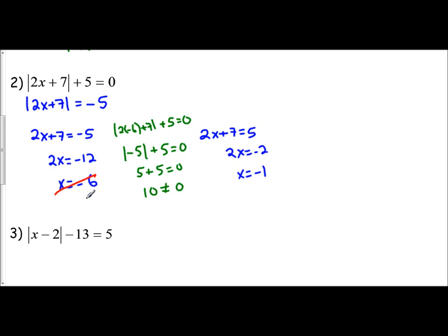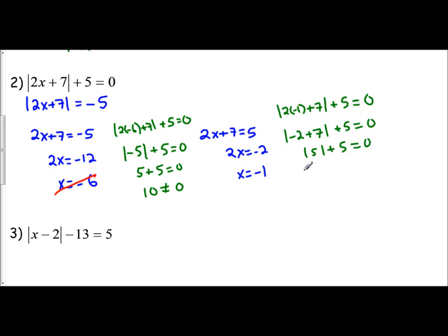So x equals negative 6 is not a solution. Let's check x equals negative 1: absolute value of 2 times negative 1 plus 7, plus 5 outside, should equal 0. Absolute value of negative 2 plus 7 plus 5 equals 0. We get the absolute value of 5 plus 5 equals 0. The absolute value of 5 is 5, so does 5 plus 5 equal 0? Does 10 equal 0? That's another false statement, so x equals negative 1 is not a solution either. There are no solutions.